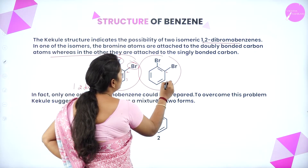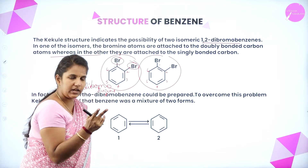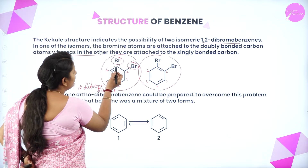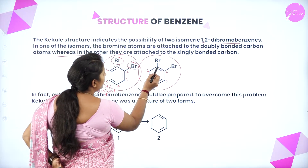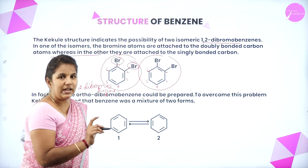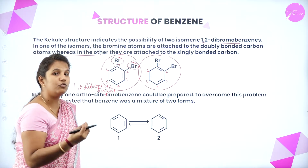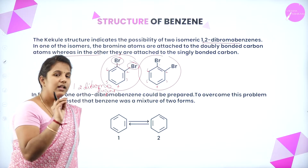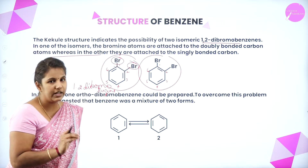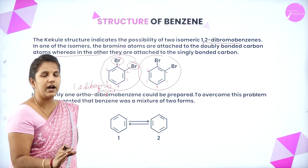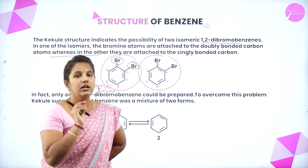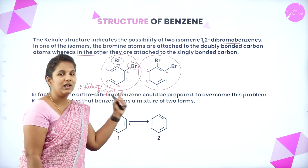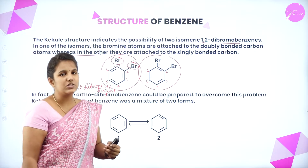Similarly, in the second structure, bromine is again attached between the first and second carbon atoms, but here the bond between carbon 1 and 2 is a double bond, whereas in the first it is a single bond. This shows that the benzene ring allows the possibility of two isomers. By writing alternating single and double bonds, we can write two possible isomers for benzene, as demonstrated using the example of 1,2-dibromobenzene.